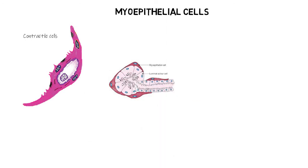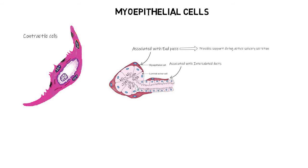Myoepithelial cells are similar in function to smooth muscles and are stellate in shape. Contraction of these cells around the secretory end piece is thought to provide support to the end piece during active secretion of saliva, which helps to expel the saliva into the ductal system.